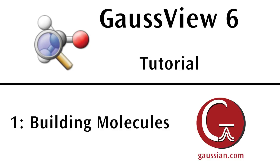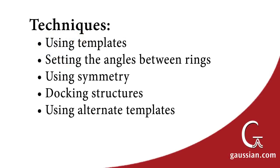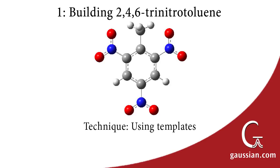In this tutorial, we will demonstrate how to build molecules using GaussView 6. We will introduce several building techniques, including rapid building with GaussView fragments, setting an angle between rings, using point group symmetry to simplify building, docking two structures, and using alternative templates for tricky building tasks.